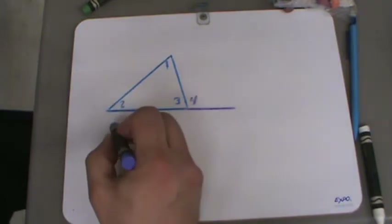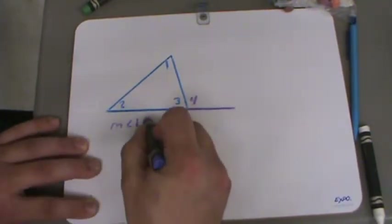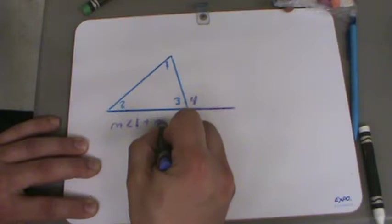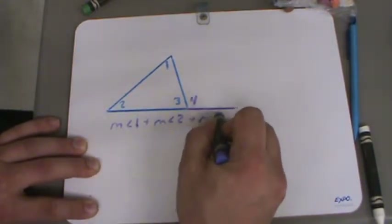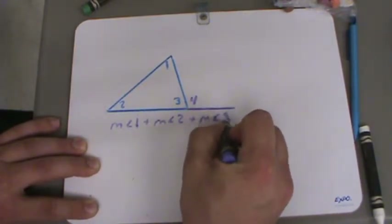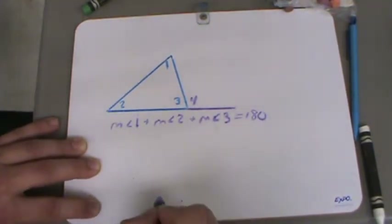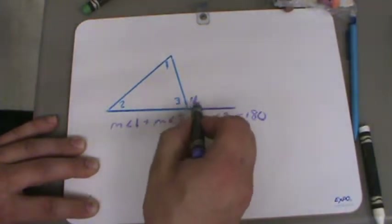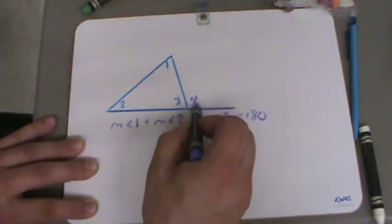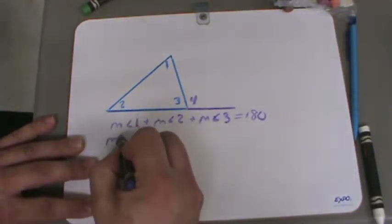Now we know that the measure of angle 1 plus the measure of angle 2 plus the measure of angle 3 is going to equal 180 degrees. And we know that these two are supplementary angles, which means they're going to add up to 180 degrees as well.